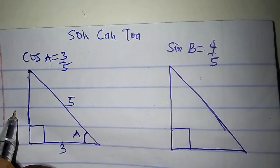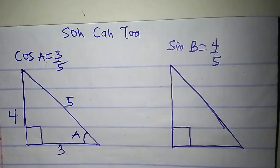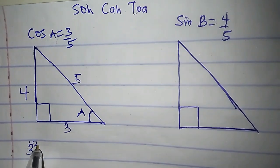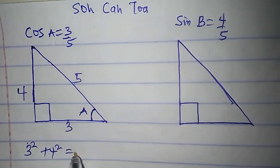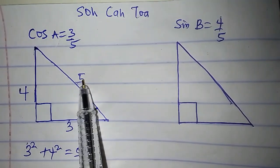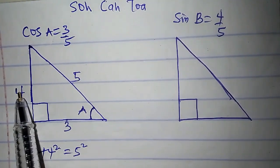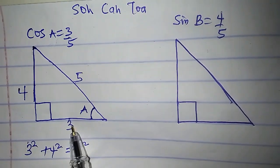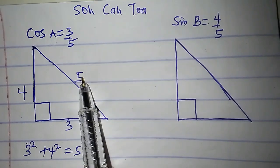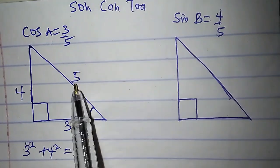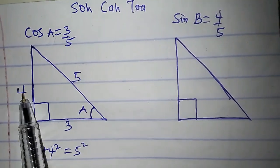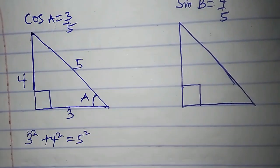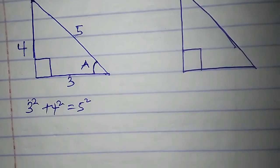Using Pythagoras' rule, I'm going to get 4 for the opposite side — it's a Pythagorean triple. 3 squared plus 4 squared gives 5 squared. 4 squared is 16, 3 squared is 9, and 5 squared is 25; 16 plus 9 gives 25. So the opposite side is 4. We already have cos A as 3 over 5, so let's find sin A and tan A.